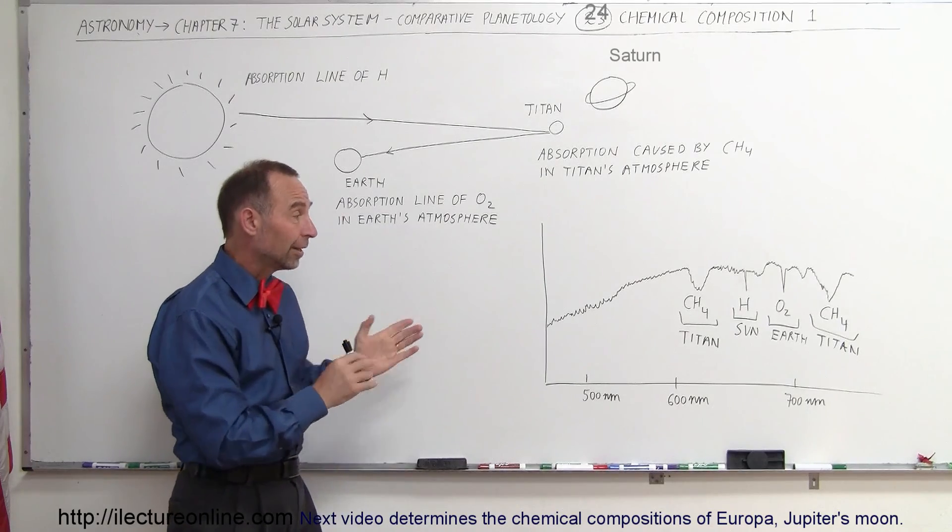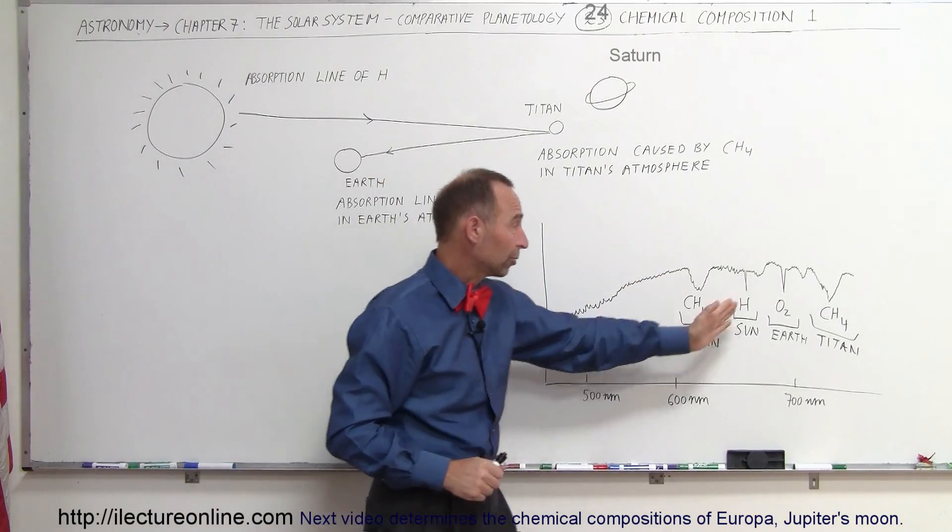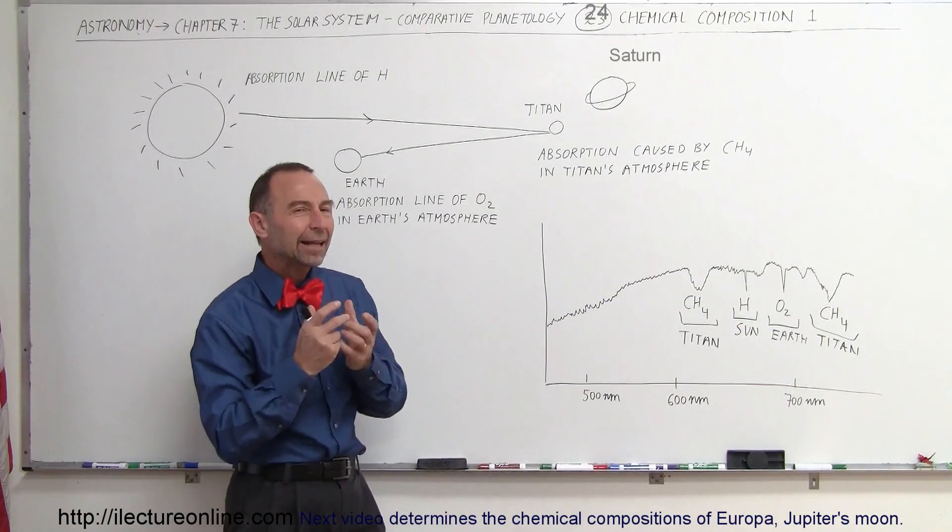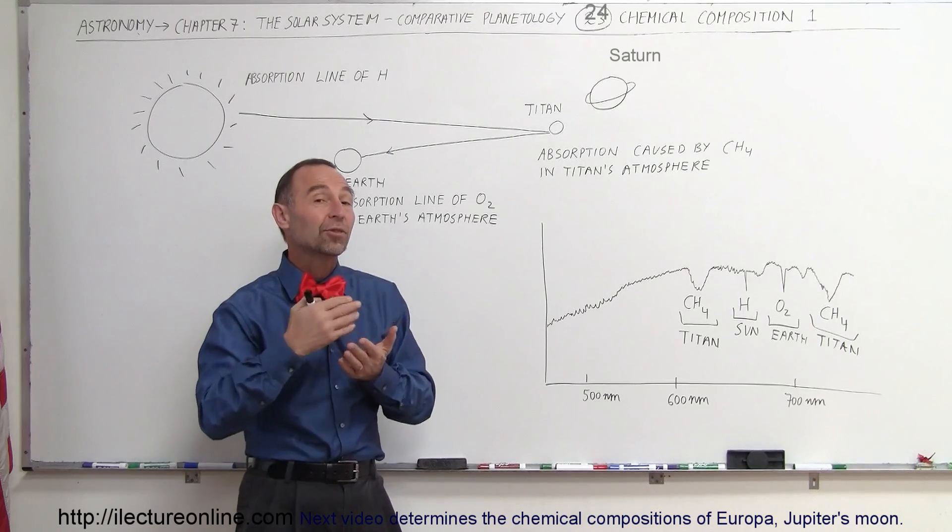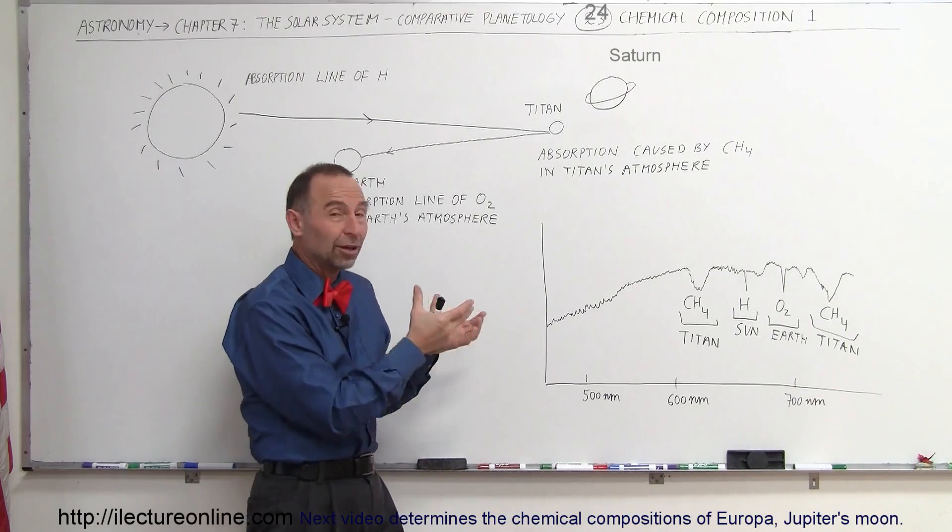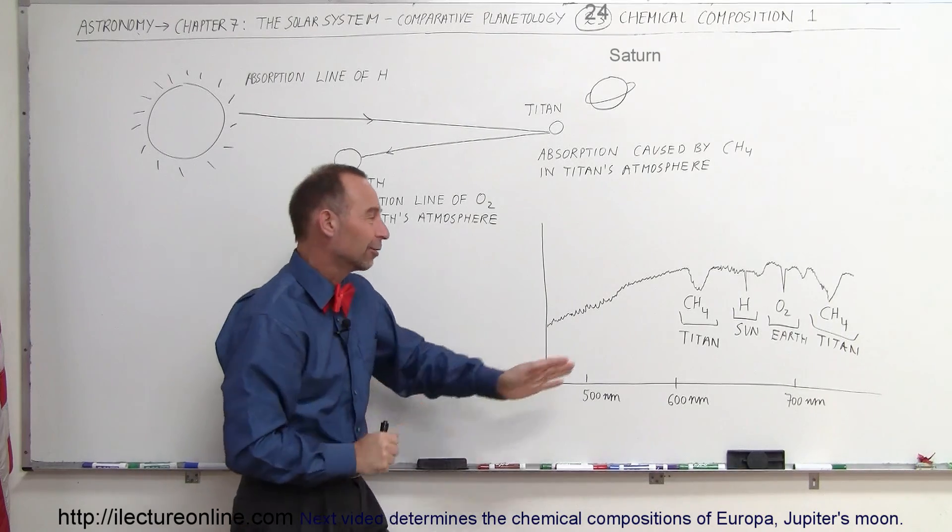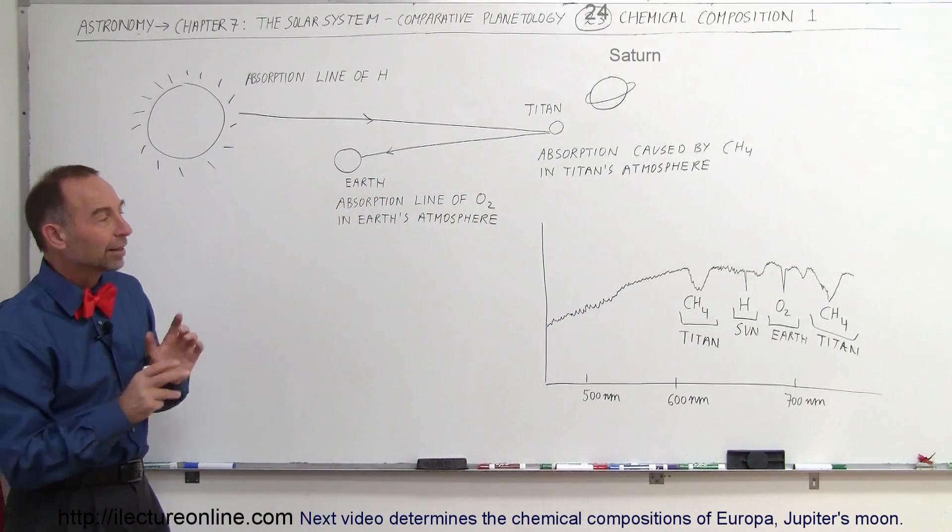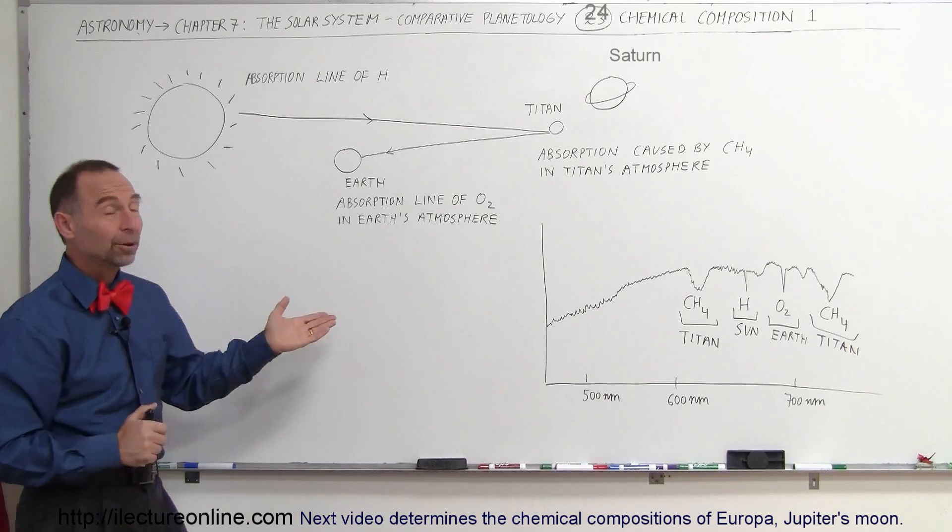But notice that we can find out where the absorption lines are, where the absorption points are, we can then figure out the wavelength of that, and from that analyze what is going on in the atmosphere of Titan, simply by studying the light reflected back from Titan. And of course taking into account that we have some other things in there that are not from Titan, and we have to separate those.